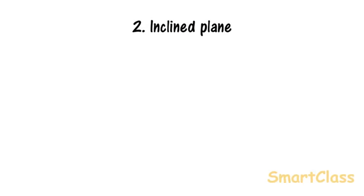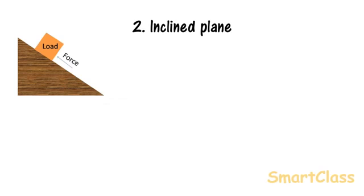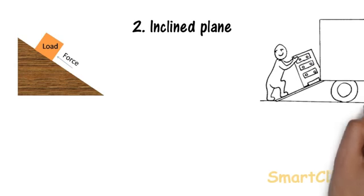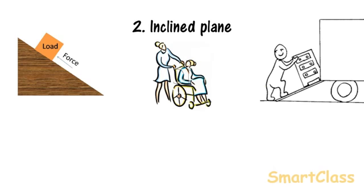Inclined plane. An inclined plane is like a ramp with a gentle slope that helps to move heavy load with less effort. It does not look like a machine though. Heavy boxes are loaded in truck with the help of inclined plane. Wheelchair can be easily pushed up on inclined plane in hospital.